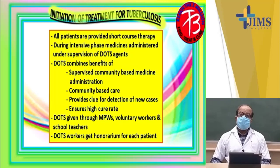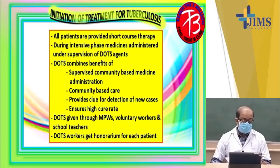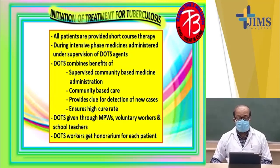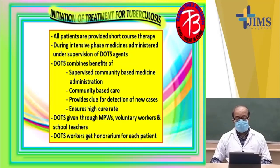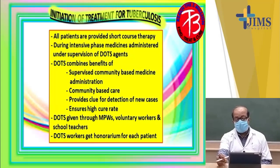This slide shows the initiation of tuberculosis treatment. All patients are provided with short course therapy. During the intensive phase, medicines are administered under supervision of DOTS agents. DOTS — directly observed treatment, short-term therapy — involves supervised community-based medicine administration, provides a clue for detection of new cases, and ensures a high cure rate. DOTS is given through MPWs, voluntary workers, and school teachers. DOTS workers generally receive an honorarium for each patient after the patient is completely cured.